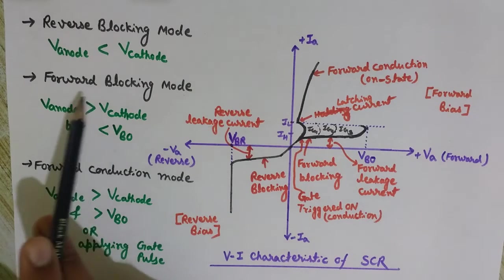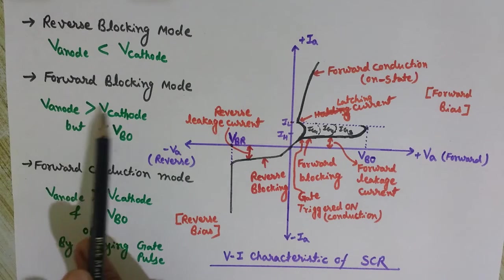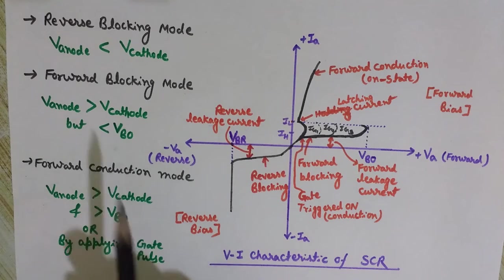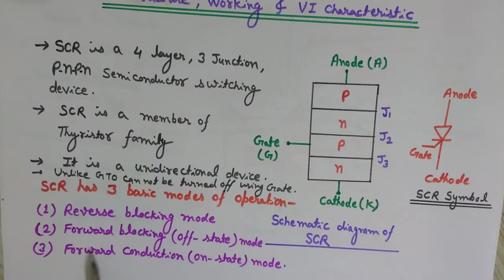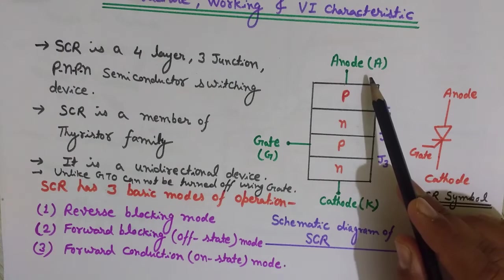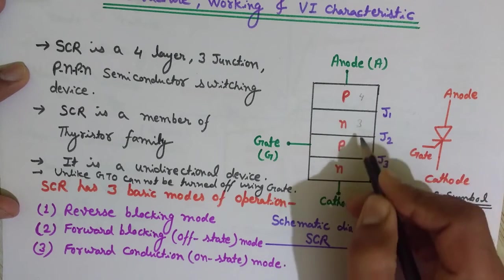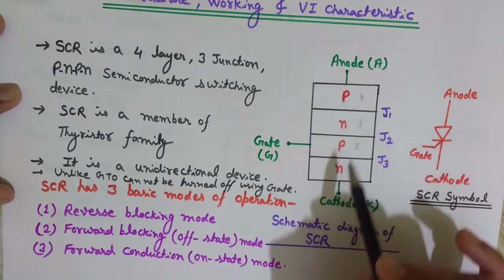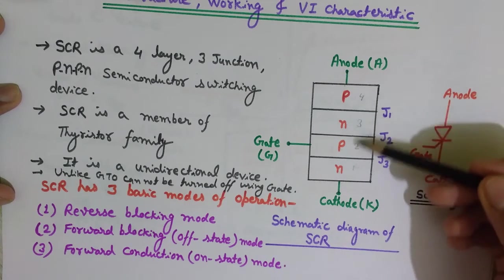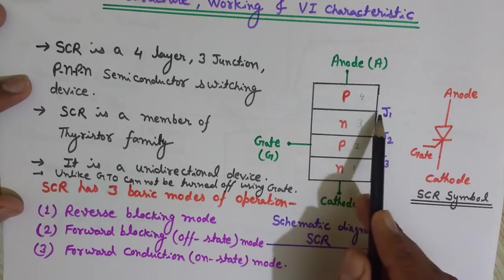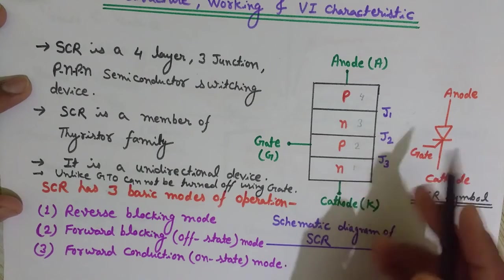Next comes the forward blocking mode. In this mode, the anode is made positive with respect to the cathode, but the voltage is less than the forward breakover voltage. Here the anode is at higher potential — let's say 4 volts — decreasing to 3, 2, 1 towards the cathode. We need to identify which junction is forward biased and which is reverse biased in this configuration.